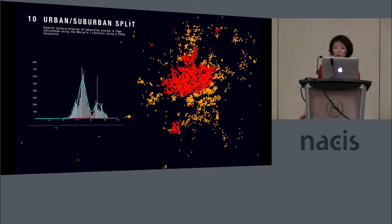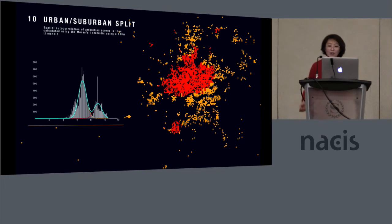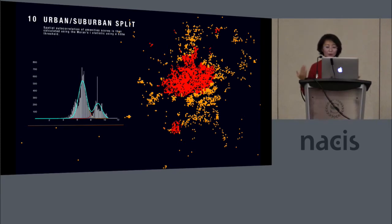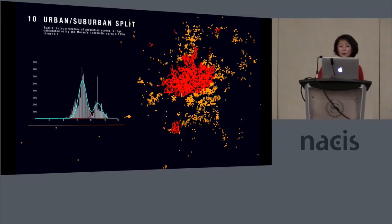We split the city into urban and suburban conditions, with the idea that residents in these two types of urban spaces have different tolerances for traveling to local amenities. At the heart of the city, you probably won't walk far to reach a grocery store, whereas in a suburban area you're likely to drive or walk further. You can see from the population distribution that the city is broken down into these multimodal conditions.